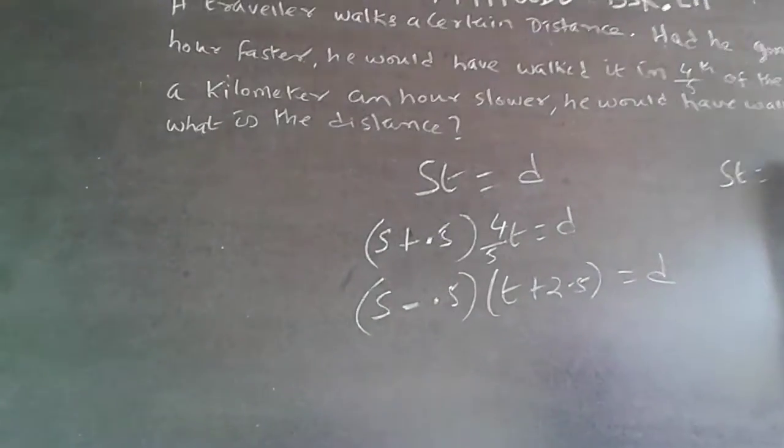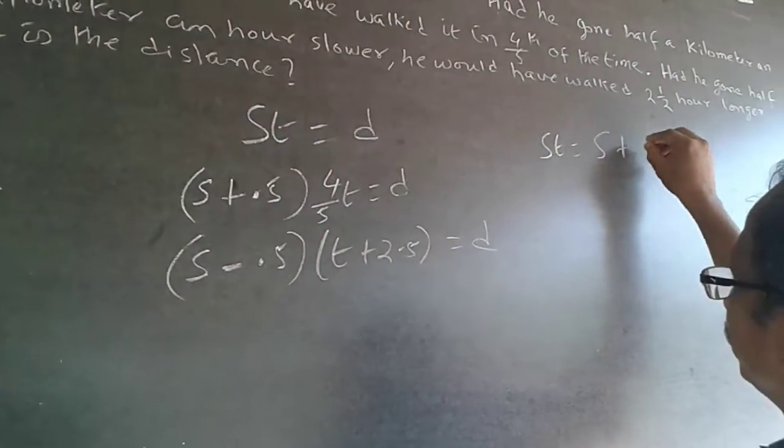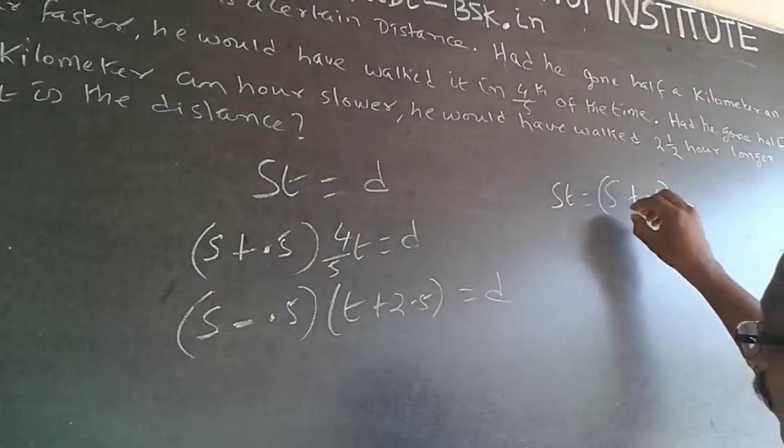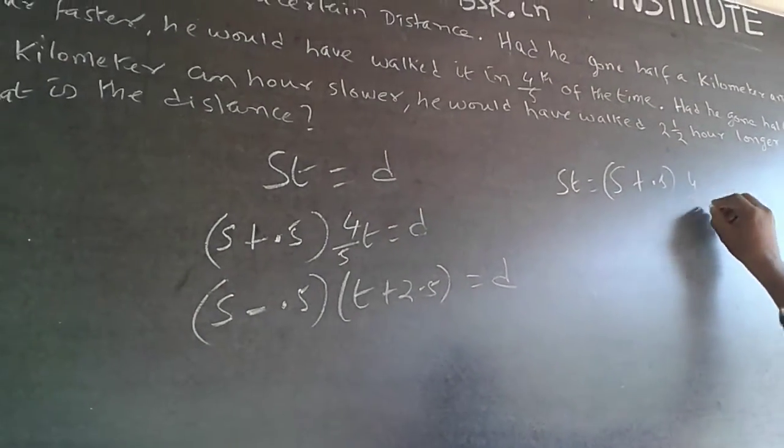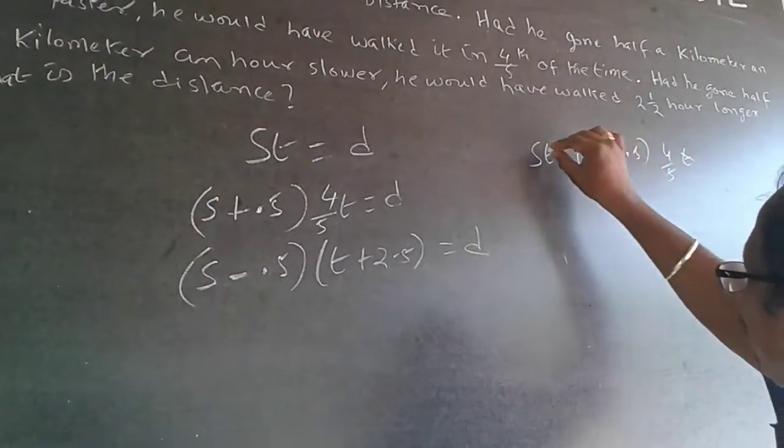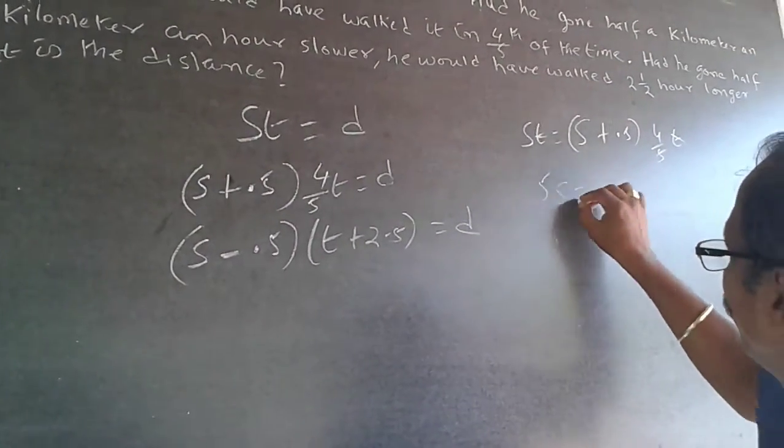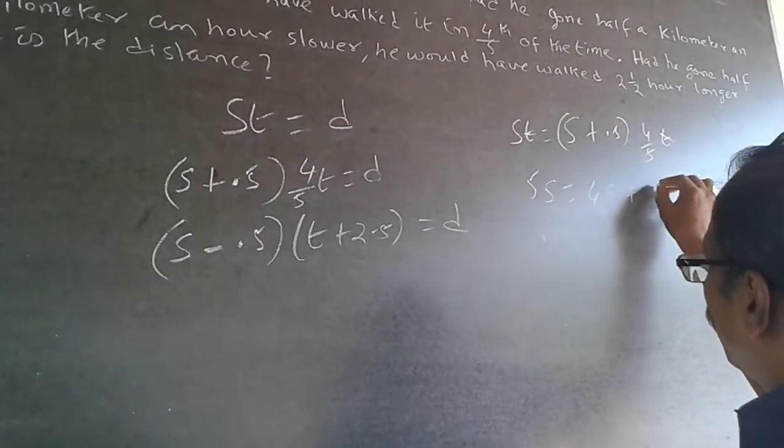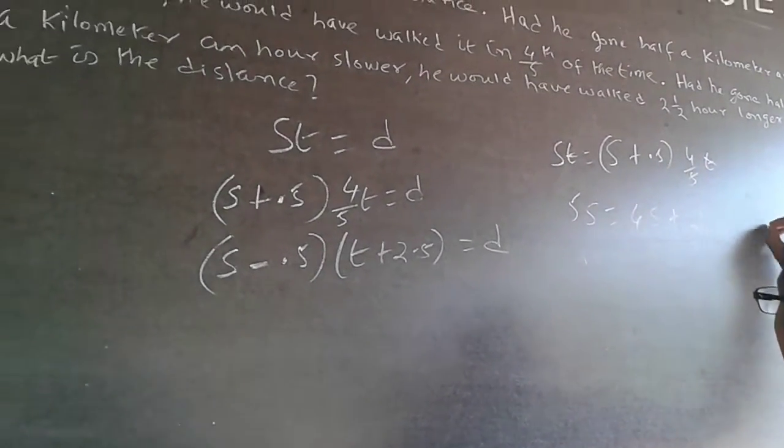So ST will be equal to S plus 0.5 into 4 by 5 of T. Now this 5 will go there and this T will get cancelled out. 5S will be equal to 4S plus 2, or S will be equal to 2.